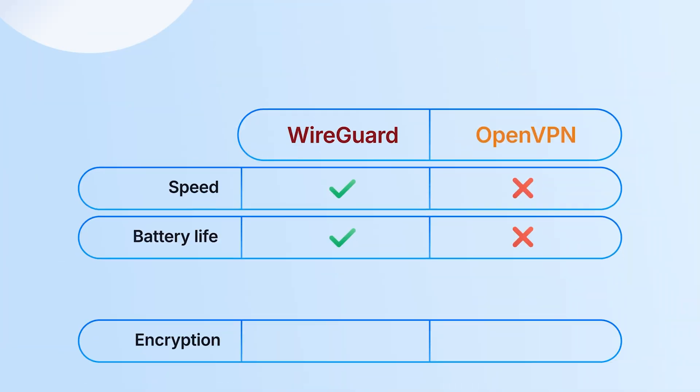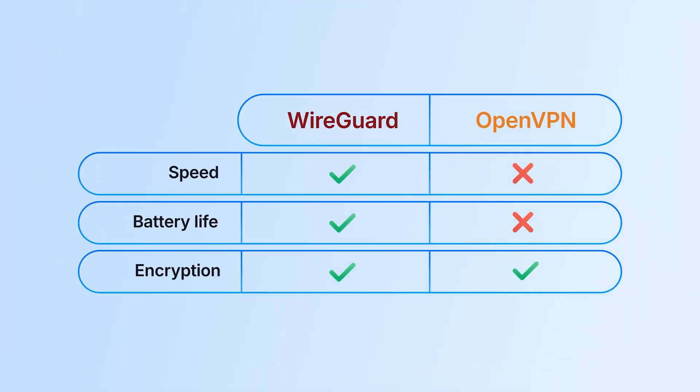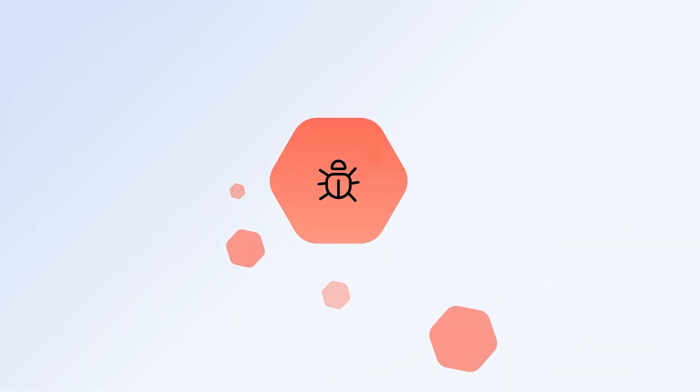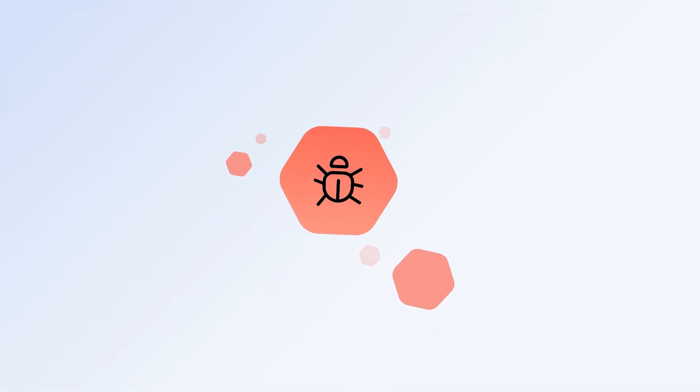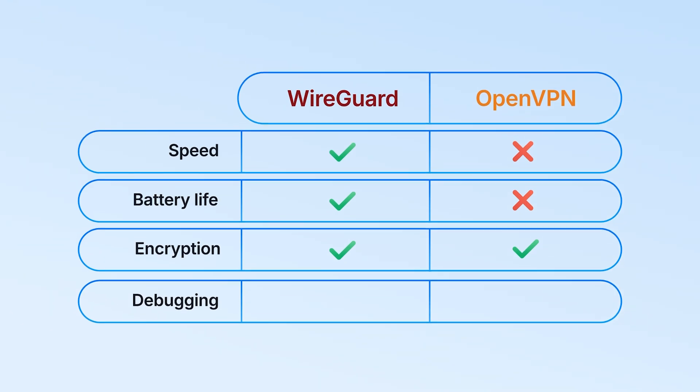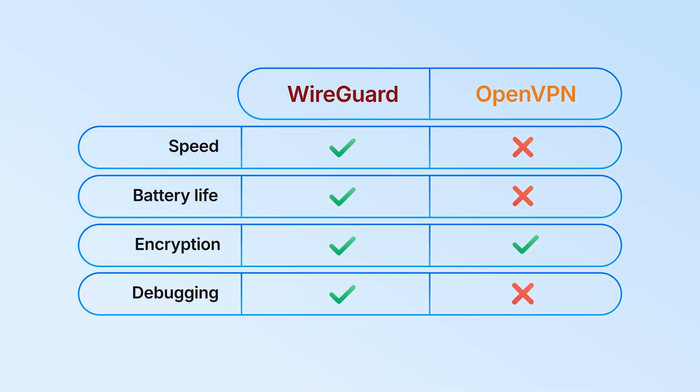The encryption part is a little bit tricky. Both of these protocols are robust. However, WireGuard offers modern cryptography like ChaCha20, but it's fixed, while OpenVPN supports many algorithms. When it comes to encryption, kudos to both. Security-wise, WireGuard pulls ahead, since its lean code is just easier to manage and audit.